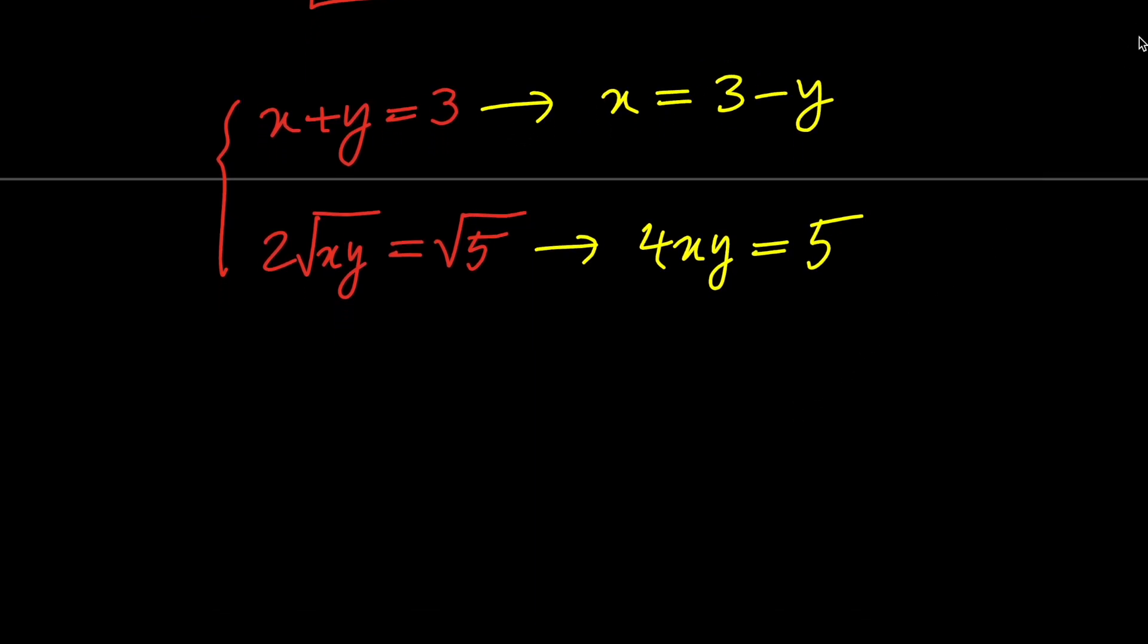Next, let's go ahead and replace this x with 3 minus y using the first equation. So we have 4 times this times y equals 5, which is an equation in terms of y.